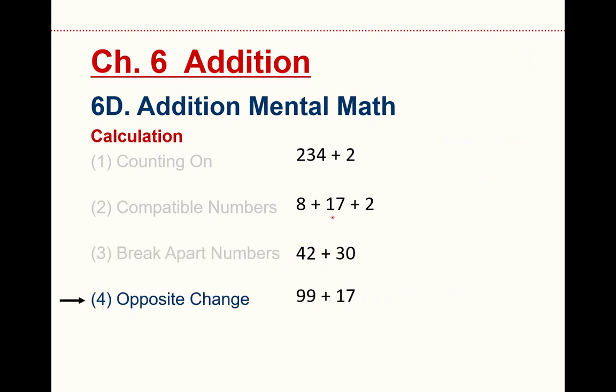Last step. Opposite change. Sometimes I have a number that's very close to a nice number. 99 is very close to 100. So if I just add 1 to that and subtract 1 from the 17, I get an easier addition problem. 100 plus 16 and that has the same answer. So those are the four addition techniques for calculation. When I want an exact answer, give these things a try. Compatible numbers, break apart, and opposite change.